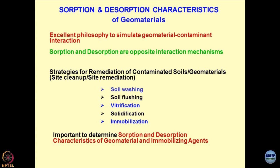Then there is solidification — I might take contaminated soils and add a solidifier into it. Sometimes we call these agents stabilizers or immobilizers. Cement is a stabilizer, immobilizer, and solidifier. If I take contaminated soils and mix cement into it, I have trapped all the cations and unwanted species present in the system because of the cementation effect. All these cations get held chemically in the matrix of the cement — they cannot come out into the environment. Solidification is a good form of immobilizing the waste.